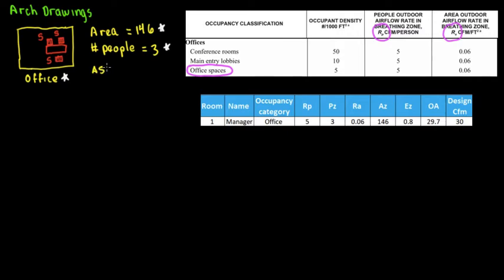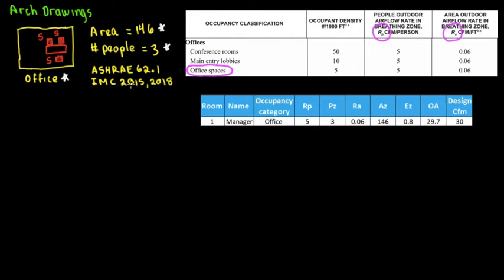ASHRAE 62.1 is for commercial, and number two — ASHRAE 62.2 — is for residential. So we're doing this for commercial purposes. This is also embedded into the IMC, whether the 2015 or 2018 edition — they are pretty much almost the same. You can always go online and find IMC 2015 or 2018 and go to chapter four, which covers ventilation. ASHRAE 62.1 is the standard, and the International Mechanical Code is the mechanical code depending on the jurisdiction or county.